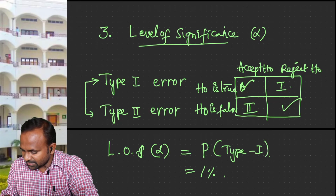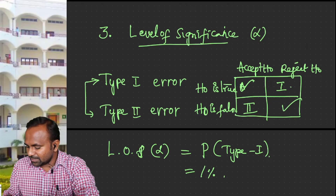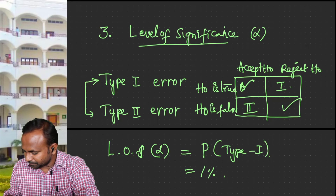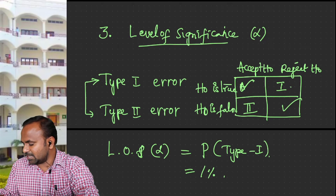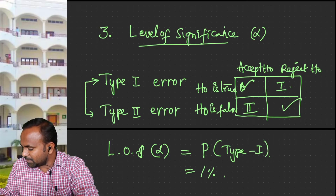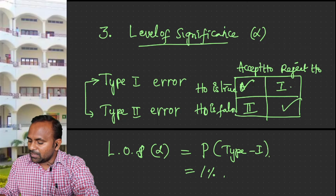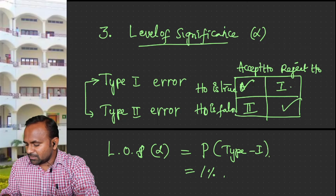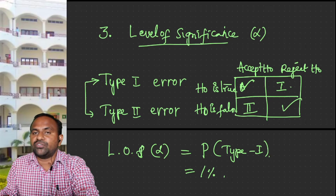The critical region has been placed in the two tails of the normal distribution, whereas the middle portion is called the acceptance region. The critical region is the region in which the null hypothesis is to be rejected though it is true, and in the acceptance region it is to be accepted. The critical region depends on the alternative hypothesis that you have selected.